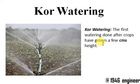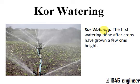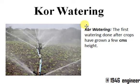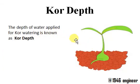Core watering is the first watering done after crops have grown a few centimeters in height. First, you plow the field, you sow the crop, and you water it, and then the crop starts to grow. After a growth of a few centimeters — around three or four centimeters — you again need to water it. Such watering is known as core watering.